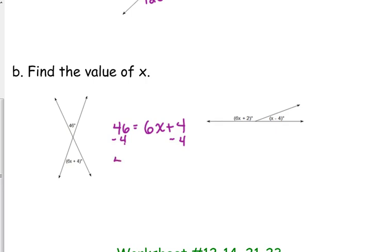Subtract 4 from both sides, so we get 42 is equal to 6X. Divide both sides by 6, so 7 is X.